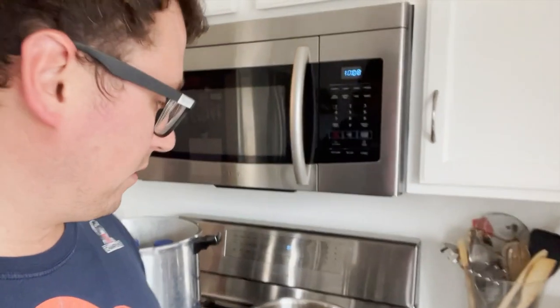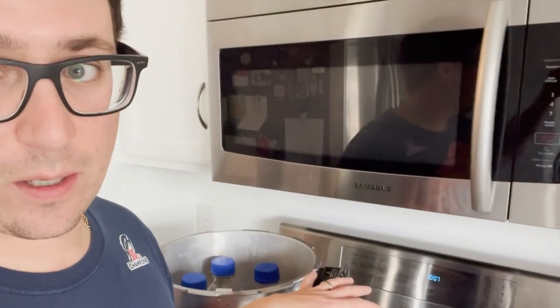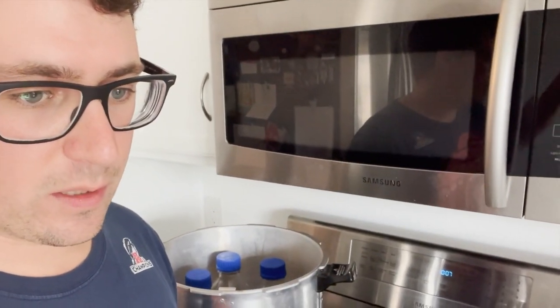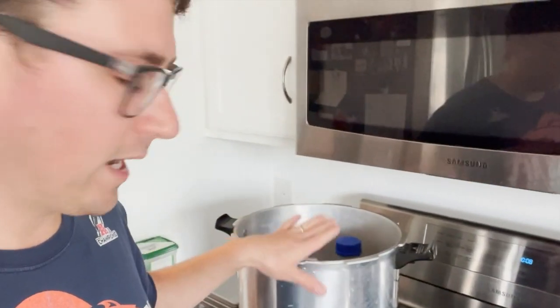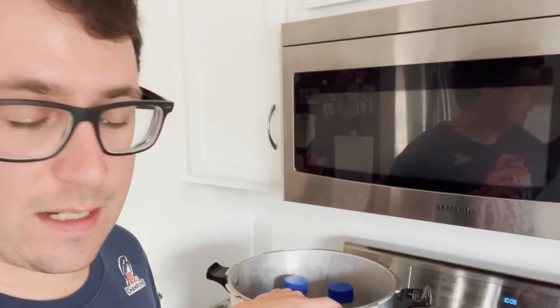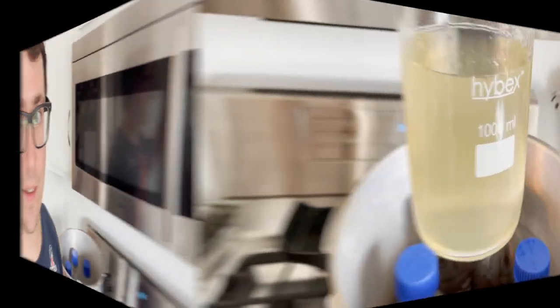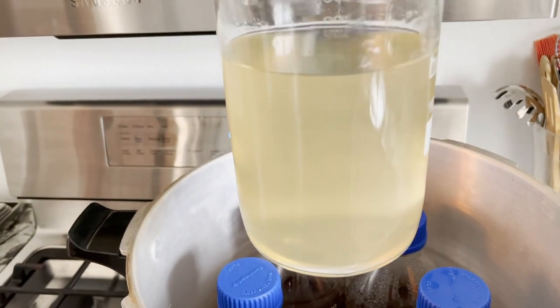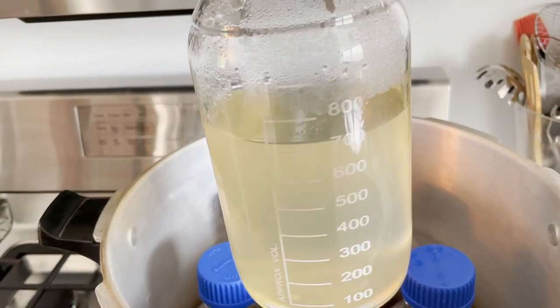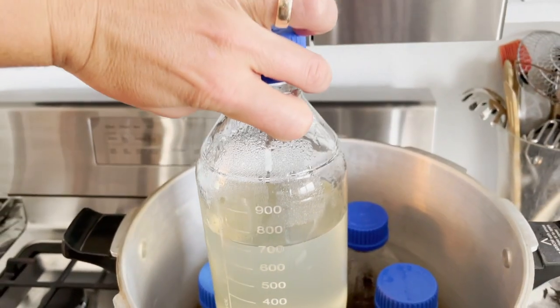So then I guess the last tip I have is to make sure that you pour them at the right temperature. We'll cook these for 20 minutes at 15 PSI or 250 degrees Fahrenheit, and then we'll let them cool down to about 130 before we pour. Right, so see how nice and clear that agar is once it's completely dissolved.